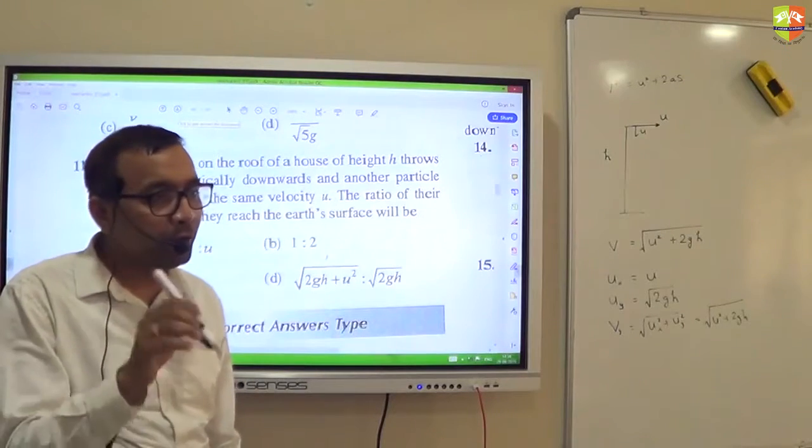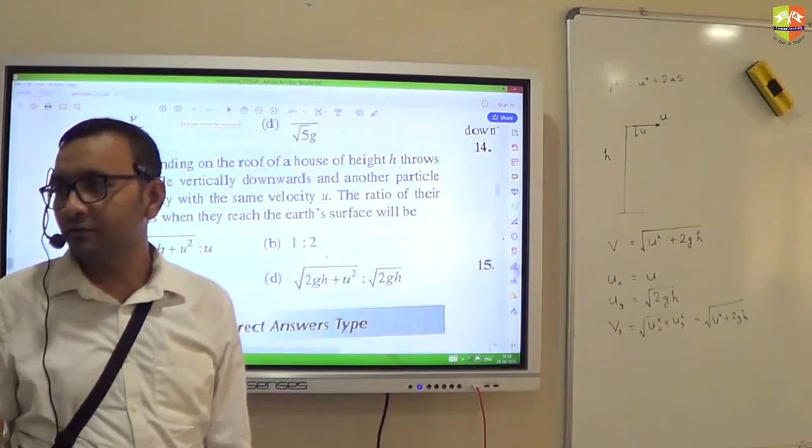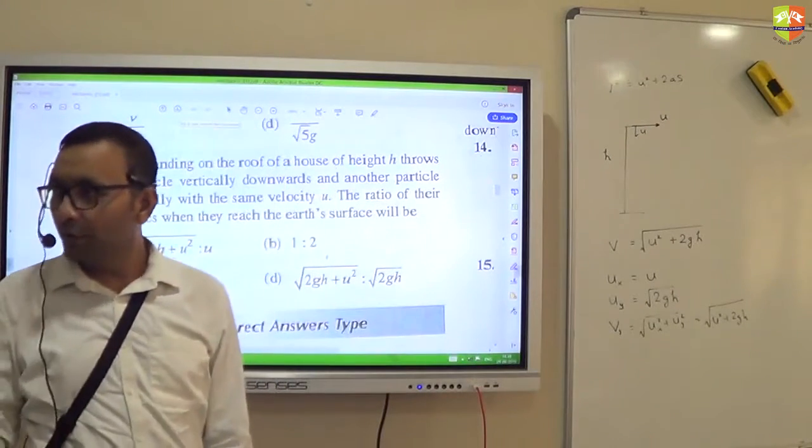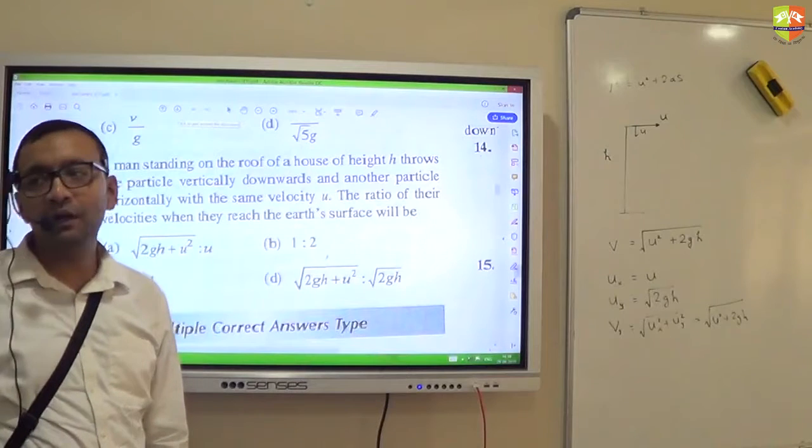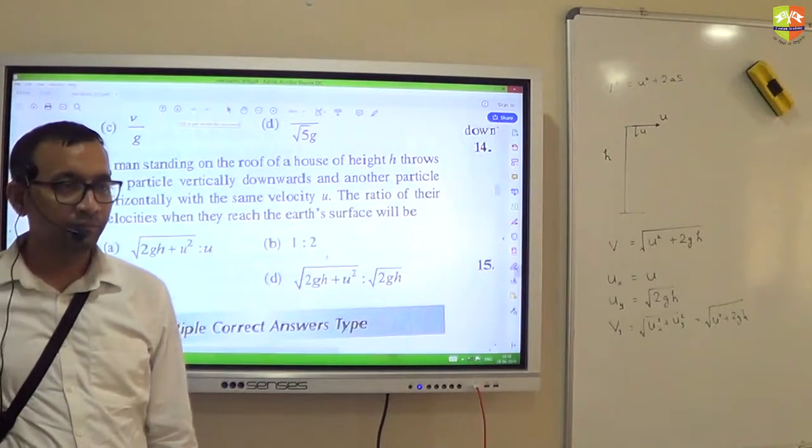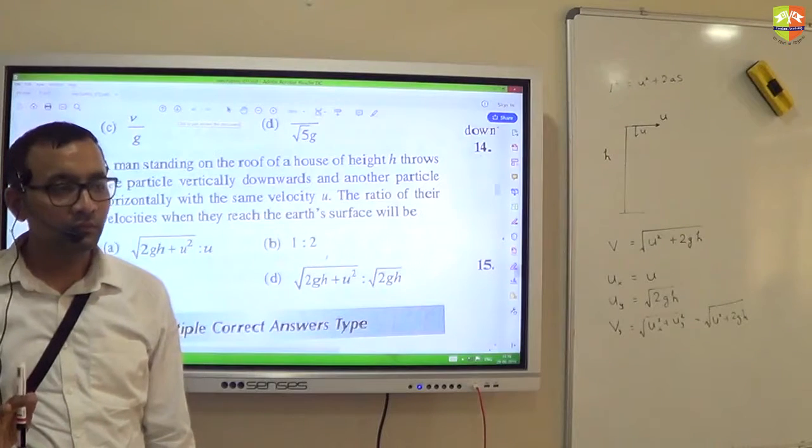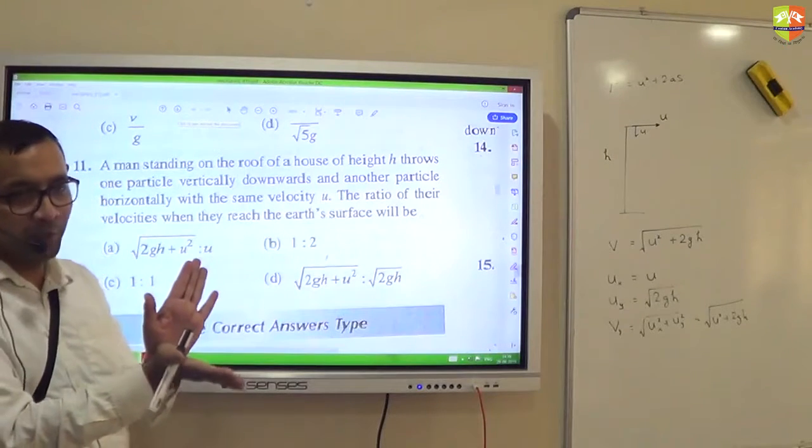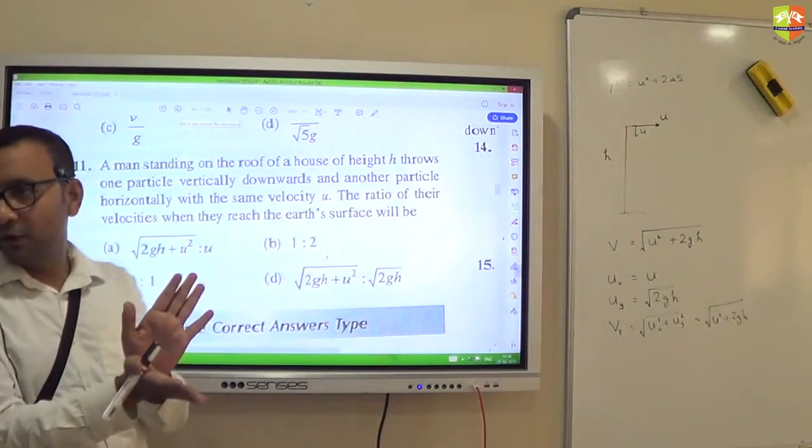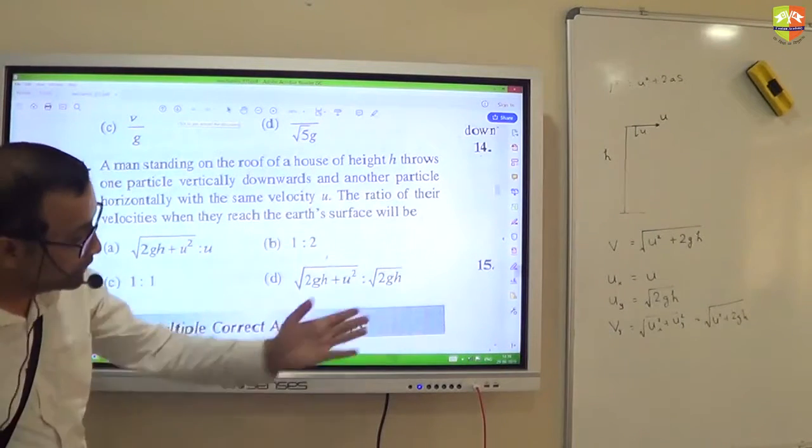Velocity along vertical direction will be root 2gh. All of you understood this. Along horizontal direction, velocity will be unchanged, which will be u. So total velocity will be root over velocity of x direction square plus velocity of y direction square. Yes or no? Yes sir. A vector is there whose two components are given to you. Magnitude will be this square plus that square and the root. Okay. So it is 1 is to 1.